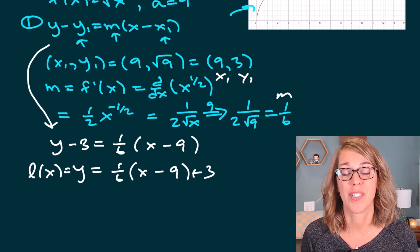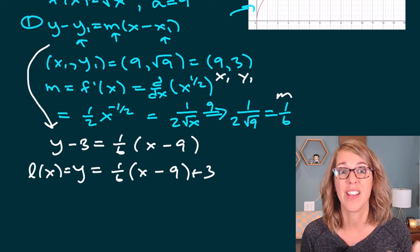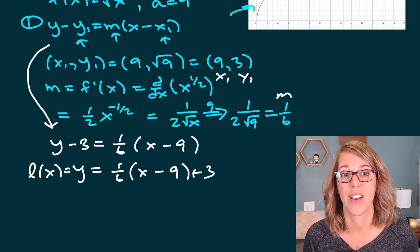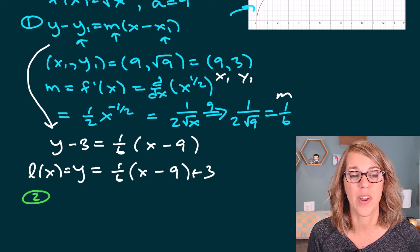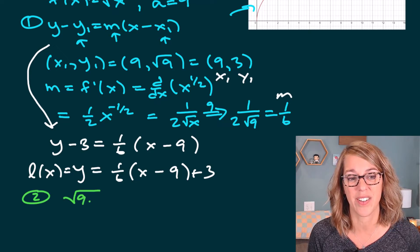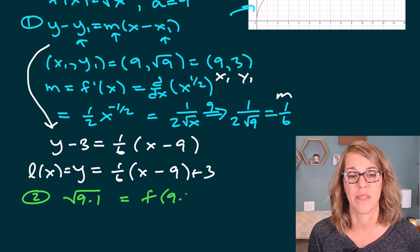Now I'm ready for step number two. Step number two is to use the linear approximation to evaluate the square root of 9.1. So step number two, we're going to look at √9.1, which would be f(9.1).